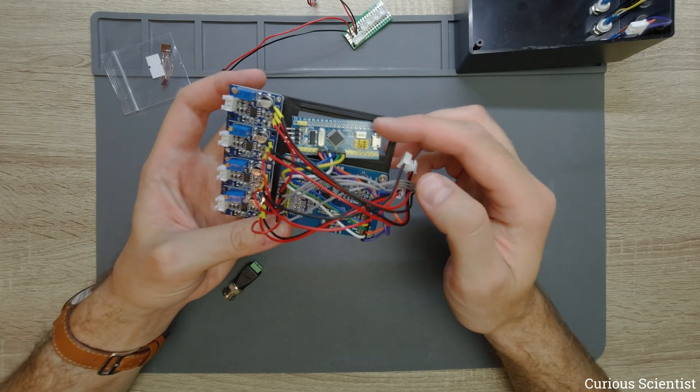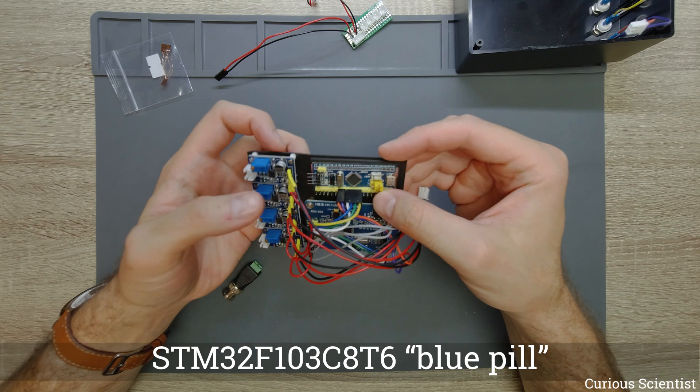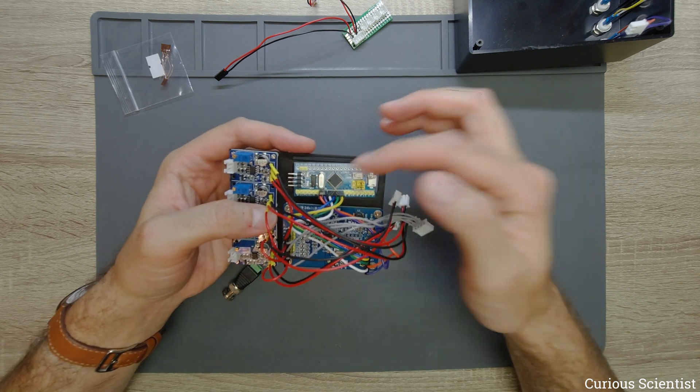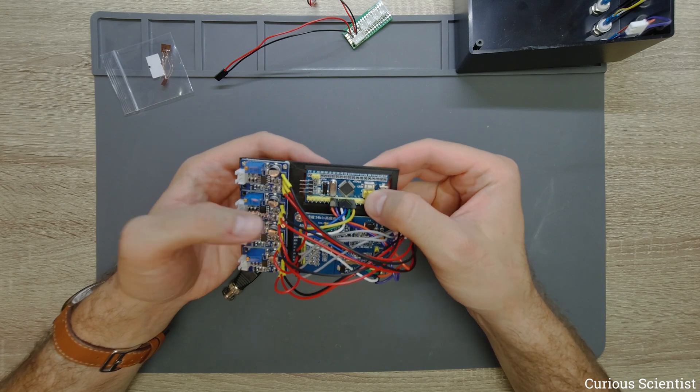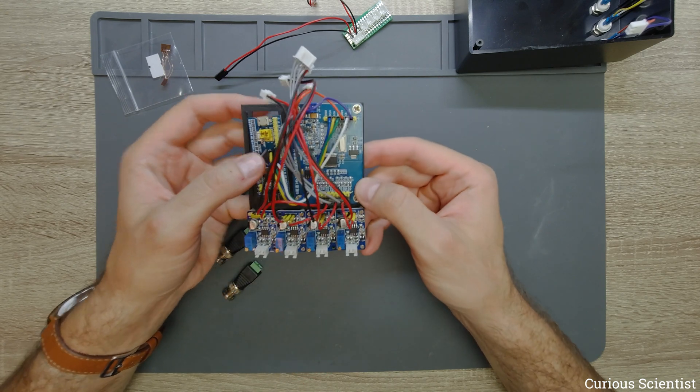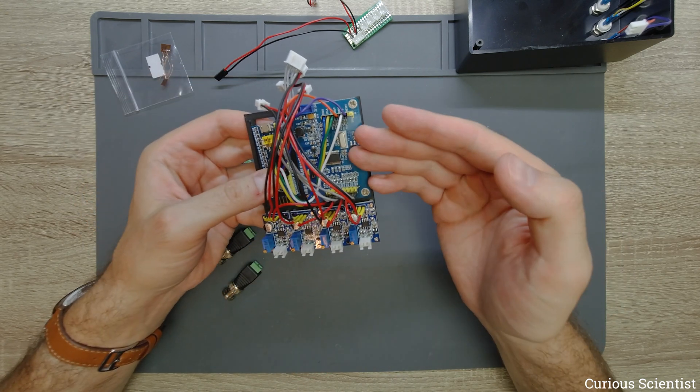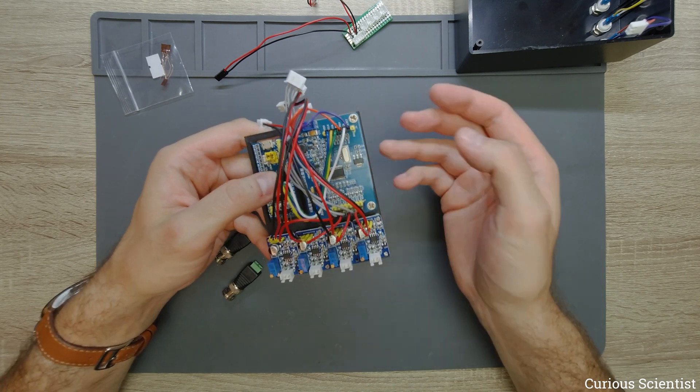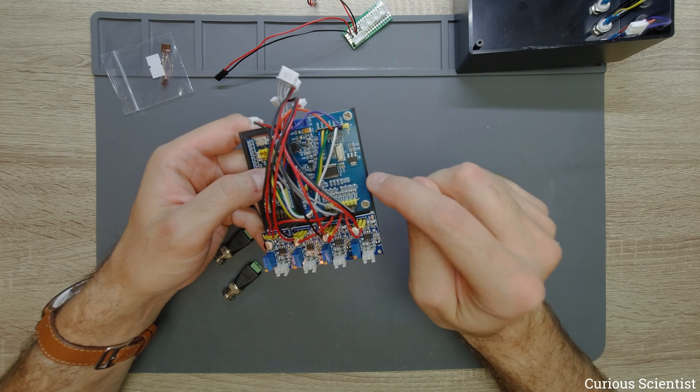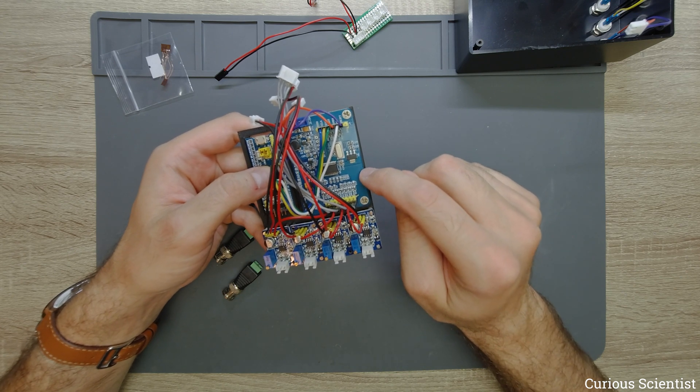The first is an STM32 or blue pill. This will be used to communicate with the computer and also to take care of the data coming from the next circuit which is an ADS1256.